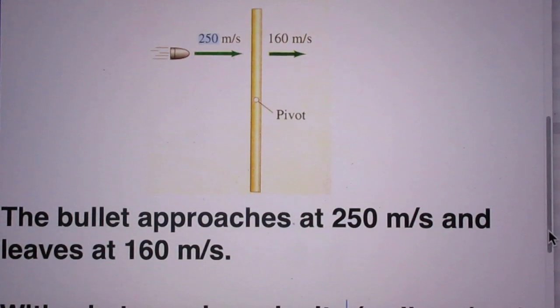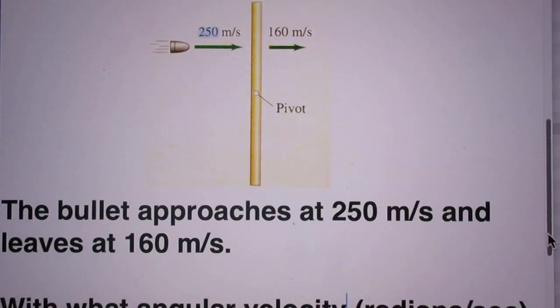The bullet approaches at 250 meters per second and it leaves the rod at 160 meters per second.